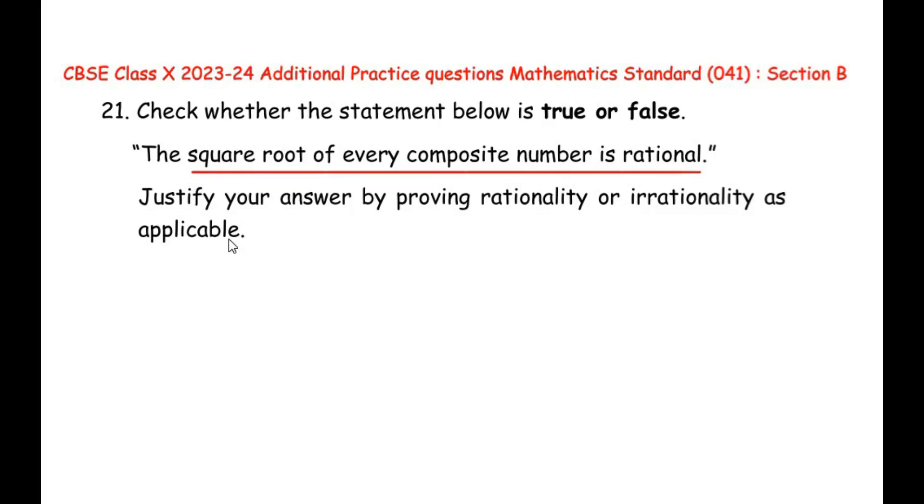Here they have given a statement that the square root of every composite number is rational. First of all, composite numbers are numbers which have more than two factors. For example, 4 is a composite number because it has factors 1, 2, and itself.